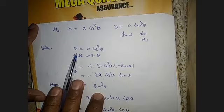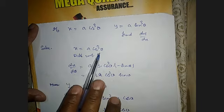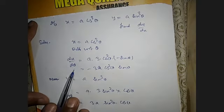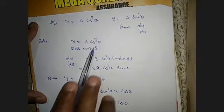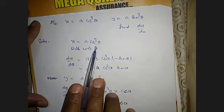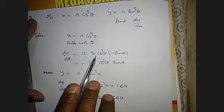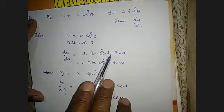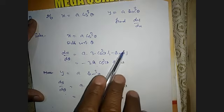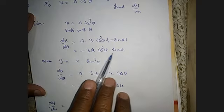Here x = a·cos³θ, and x depends on θ, so differentiate with respect to θ. Then dx/dθ: it's a power function, so use the power rule — derivative of xⁿ is n·xⁿ⁻¹. That gives 3·cos²θ, then by chain rule multiply by the derivative of cosθ, which is −sinθ. So dx/dθ = −3a·cos²θ·sinθ.